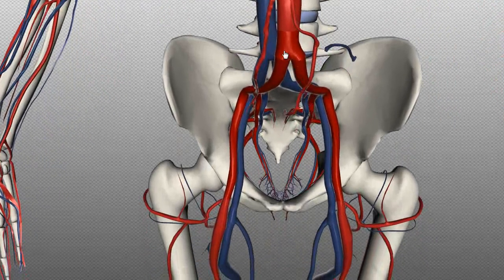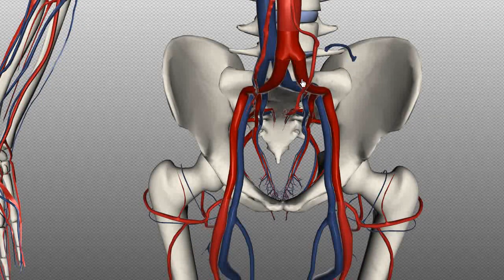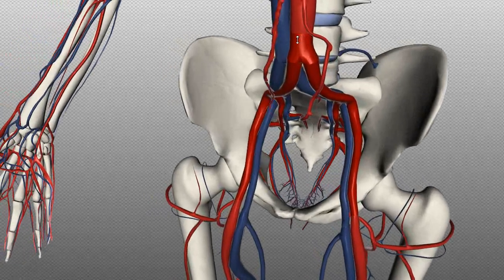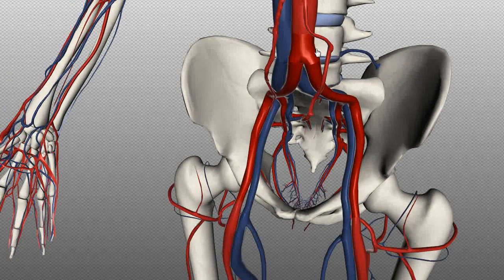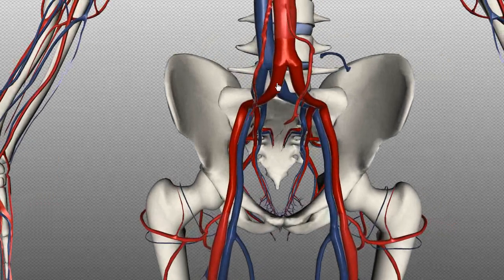Here you've got another bifurcation — the bifurcation of the descending aorta. This occurs at approximately the level of the L4 vertebra, the fourth lumbar vertebra, and it splits into the common iliac arteries: the right and left common iliac artery.